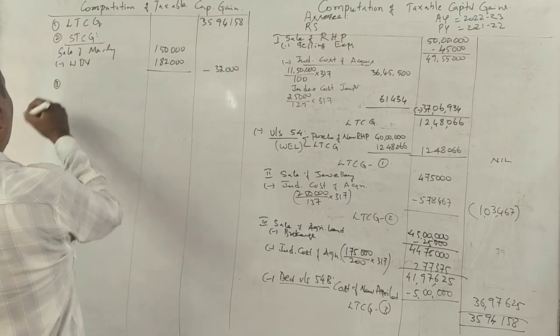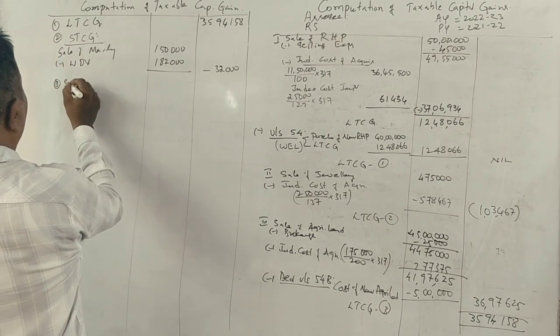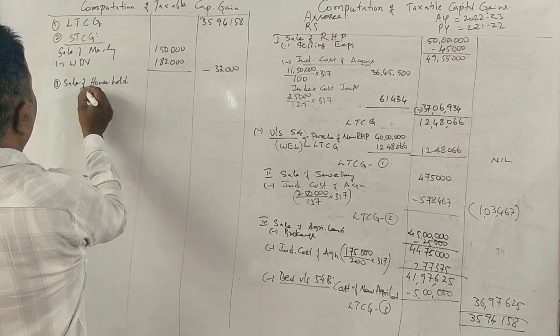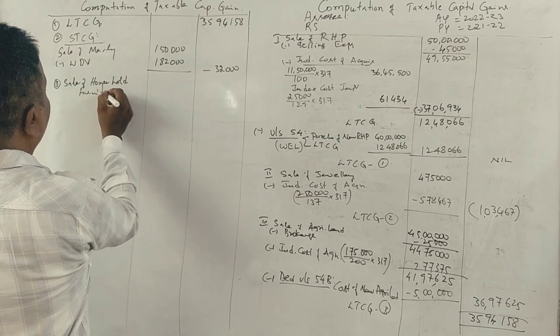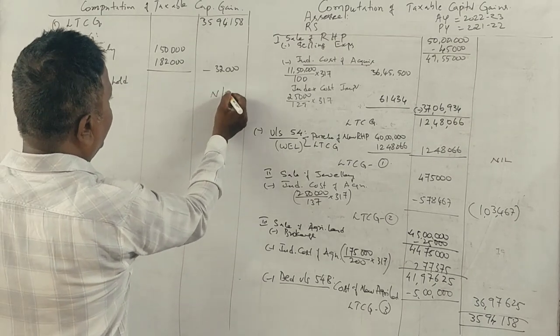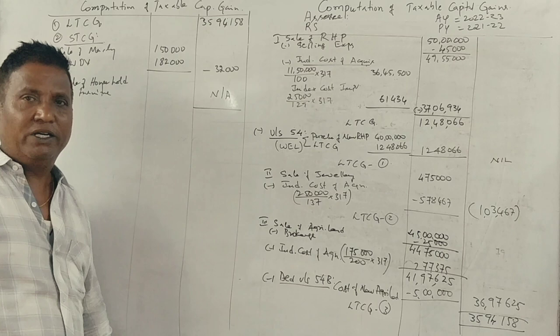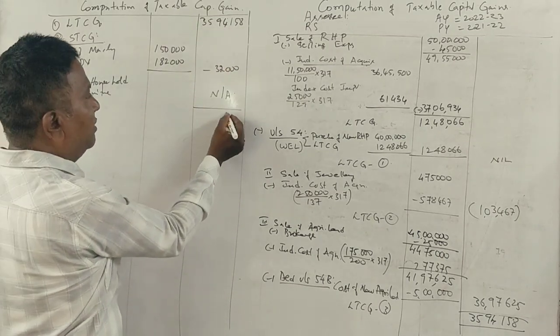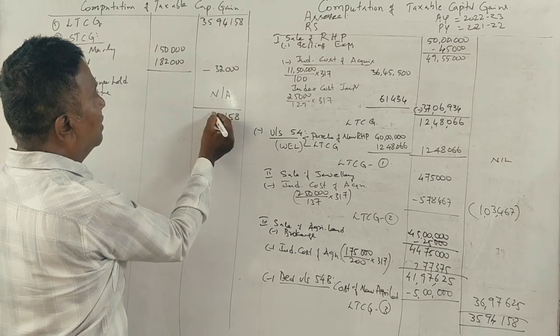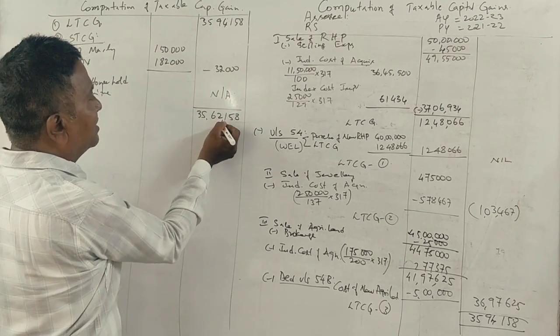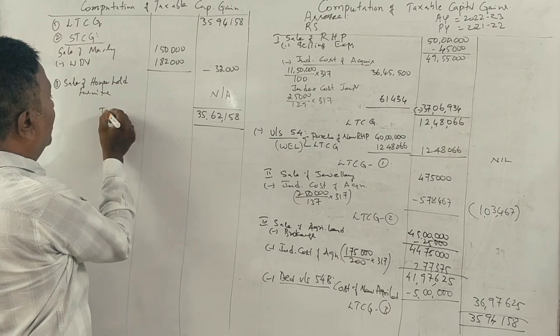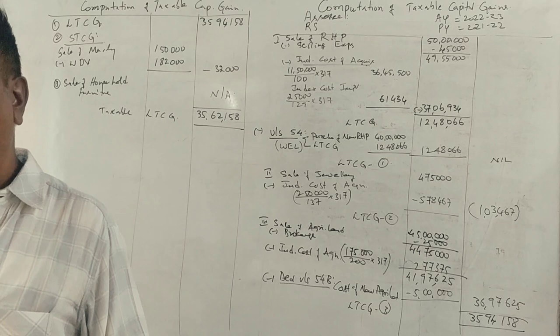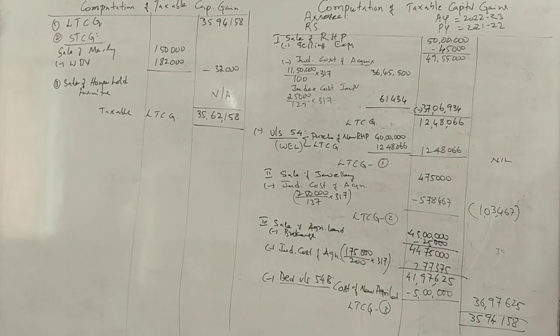The sale of household furniture is not applicable for capital gains. The total capital gain is 35,62,000. However, it is taxable long-term capital gain after exemptions.